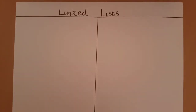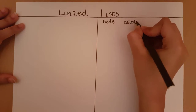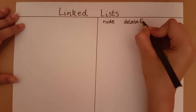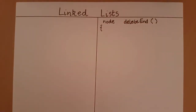In this video we will take a look at the deletion operation in the linked list, specifically deleting from the end of a linked list. I will give the example on one side and write the code on the other. I'm calling this function deleteEnd since we are deleting from the end of the linked list. This function will have no input parameters and it will return the node which we are going to delete.